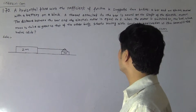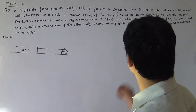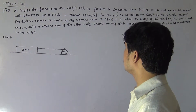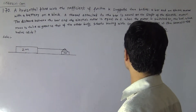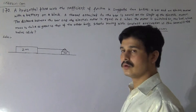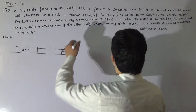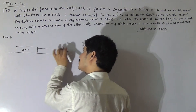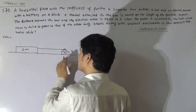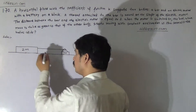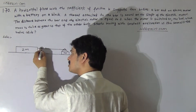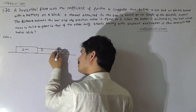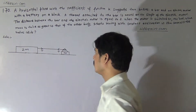The distance between the bar and the electrical motor is equal to l. When the motor is switched on, suppose the string wound on the shaft starts providing tension. After the motor starts, this string provides a tension to the block in the forward direction, and the same tension acts on this system in the backward direction.